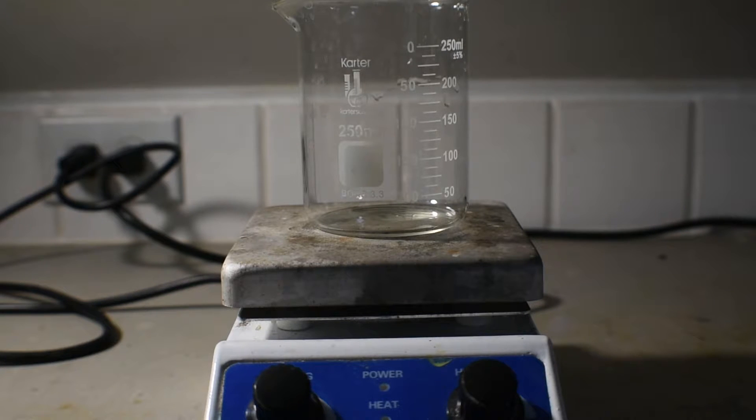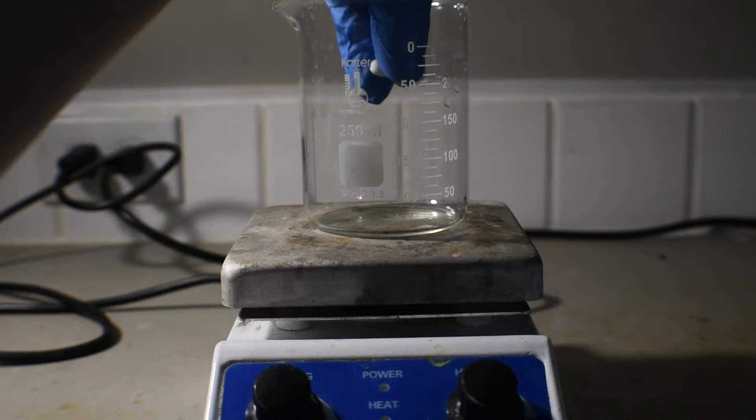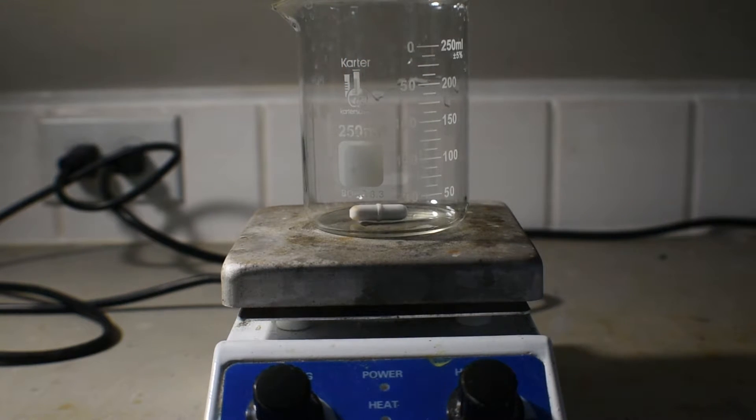First, I'm going to take a 250 milliliter beaker and add a stir bar. Now, I'm going to add the 12 grams of cobalt(II) chloride hexahydrate.